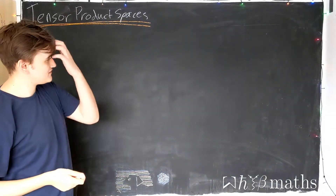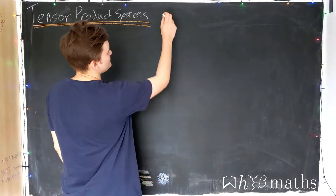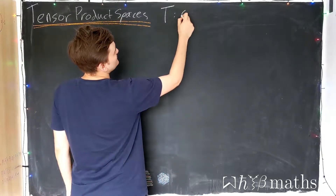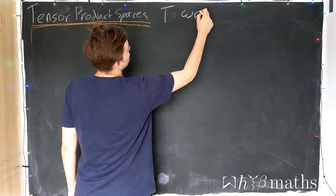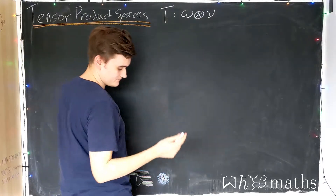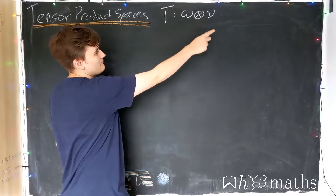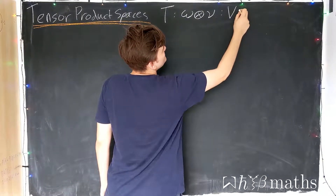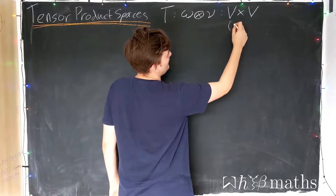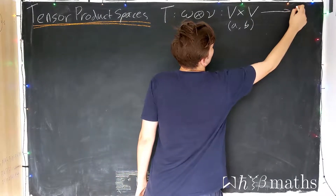Hopefully the last video was enough to convince you that we can treat tensor objects like vectors. To remind you, a tensor, in our case, is formed out of two dual vectors — we'll consider more general tensors shortly — which we saw was a multilinear map from the Cartesian product space of two vector spaces, where elements of this space are pairs of vectors, into the real numbers.